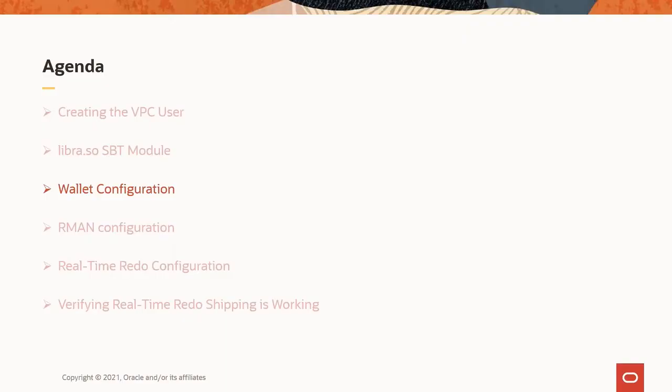Let's move on to the wallet configuration. The VPC user credential is securely stored in an Oracle Wallet. It is important to note that this is a different wallet from the encryption wallet used by Transparent Data Encryption, or TDE. The location of the wallet is defined in the sqlnet.ora file. Let's take a look at a sqlnet.ora file that has been configured for ZDLRA. In this case, we are on the protected database server. If ZDLRA replication is configured, there will be a similar configuration on the ZDLRA itself.